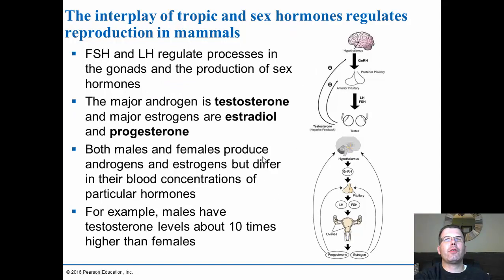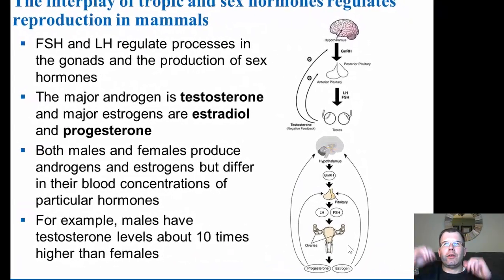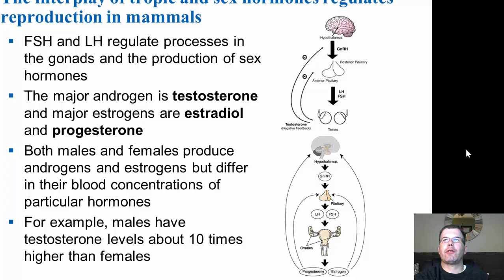LH and FSH stimulate production of sex hormones. The major androgen in men is testosterone; the major estrogen is estradiol, with progesterone also important in females. Both males and females produce both hormones, but in differing concentrations — males produce about ten times more testosterone than females. Testosterone then provides negative feedback, shutting down gonadotropin and LH/FSH production. In females, progesterone and estrogen similarly provide negative feedback on GnRH, LH, and FSH.